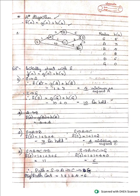Given a state space graph with nodes S, A, B, C, D, and G, each node has a heuristic value: S is 5, A is 3, B is 4, C is 2, D is 6, and G is 0. Our start state is S.